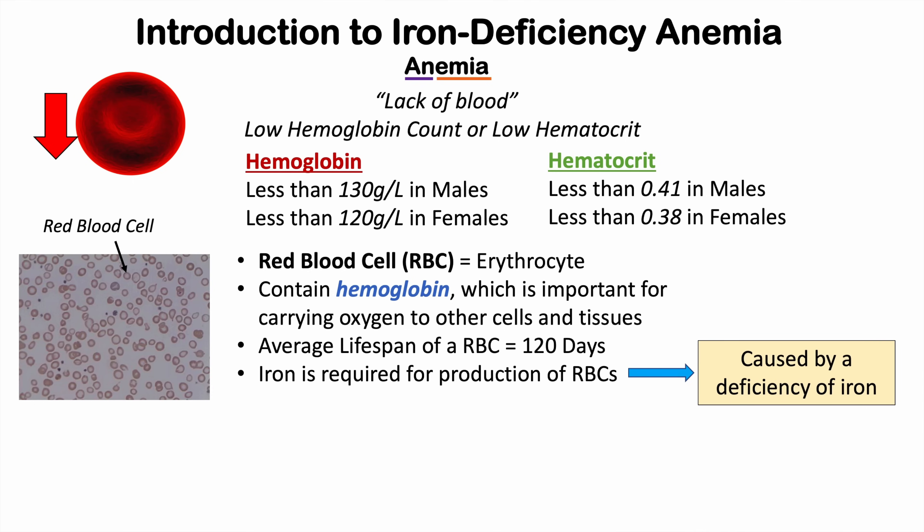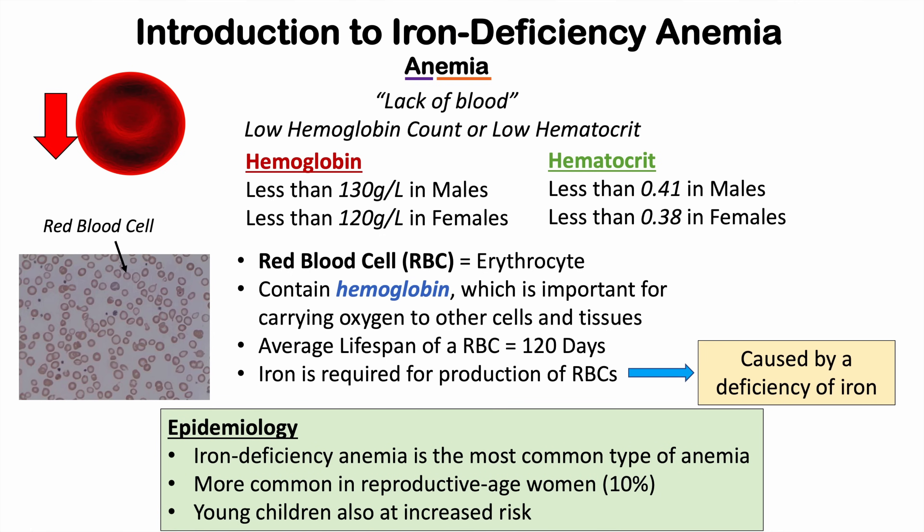Iron deficiency anemia is actually the most common type of anemia, and it affects a large portion of the world population. It's more common in reproductive age women — approximately 10% of reproductive age women may suffer from iron deficiency anemia. Young children are also at an increased risk, and we're going to talk about why both of these groups are affected.